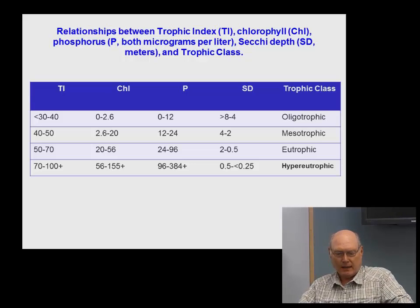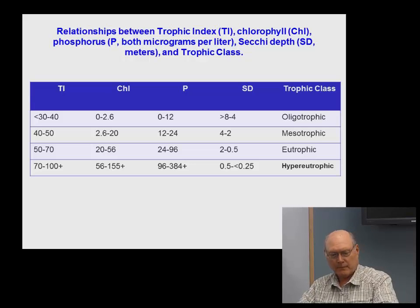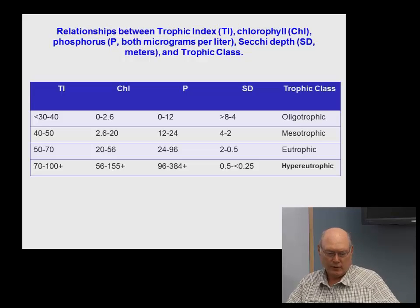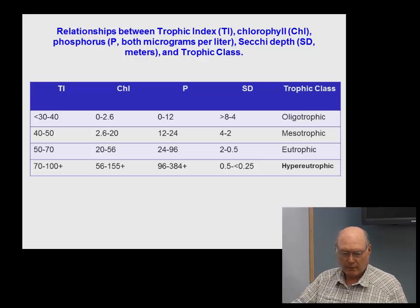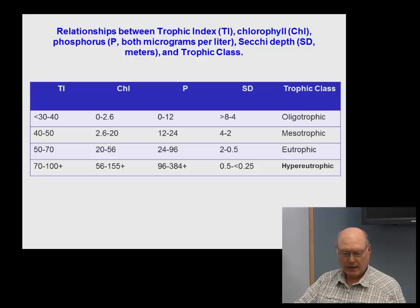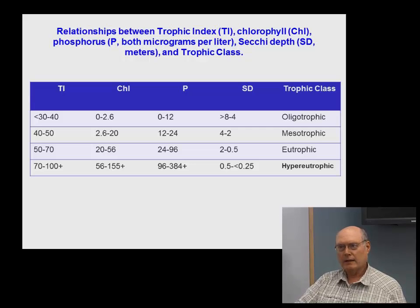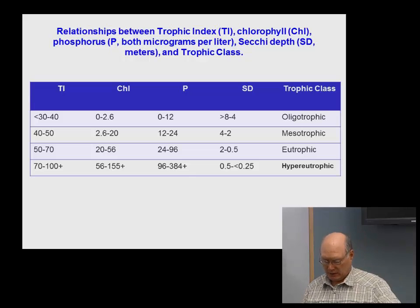Regarding trophic indexes and trophic classes for lakes — when I took limnology, all we had was oligotrophic, mesotrophic, and eutrophic. Now we've defined a trophic index using chlorophyll, phosphorus, and Secchi disc depths, creating a new classification: hypereutrophic. A trophic index of 70–100, chlorophyll 56–155 µg/L, phosphorus 96–380 µg/L, and a Secchi disc of only about half a meter defines a hypereutrophic lake. We now have quite a number of them, and that number is increasing.